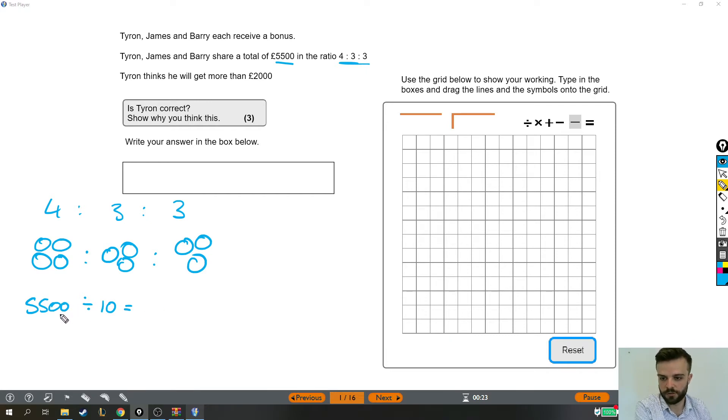Now dividing by 10 is a lot like knocking off a 0 in lots of ways. So the answer is £550 to this part, which tells me that each of these little circles is worth £550. So if I pick any of these, it's £550.